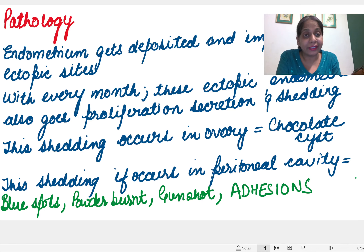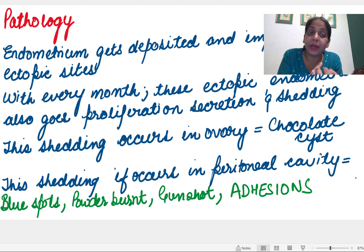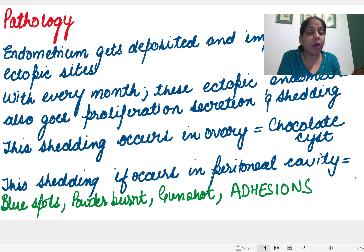To summarize the pathology: if the ectopic endometrium is in the ovary, the sheddings form chocolate cysts. If it is in the peritoneal cavity such as the pouch of Douglas, it produces blue-colored powder-burn spots which then become adhesions.